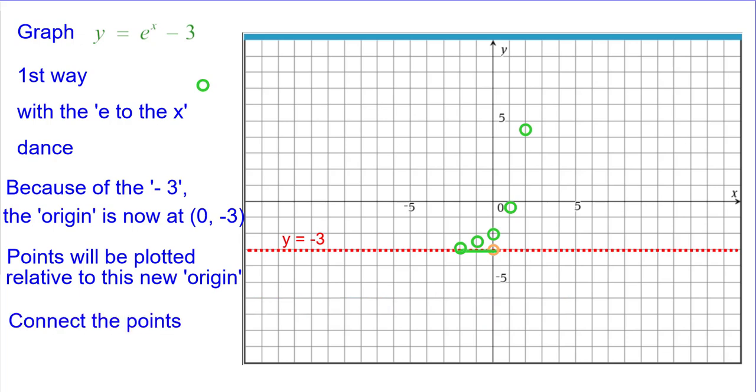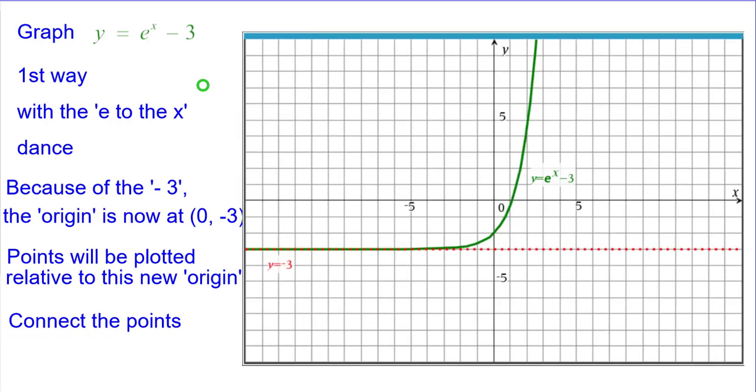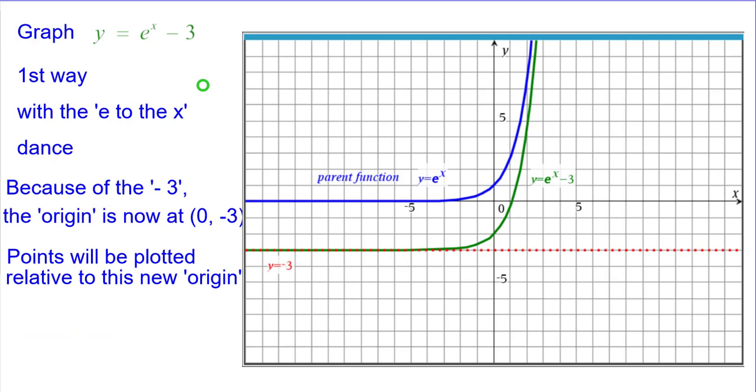We can go ahead and connect the points because we already have the asymptote drawn in. And then we'll also compare that to the parent function, y equals e to the x.